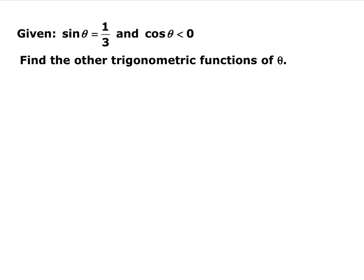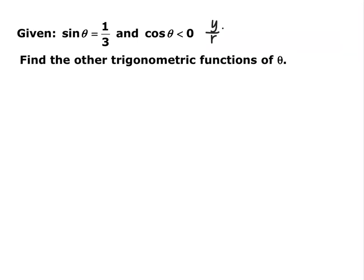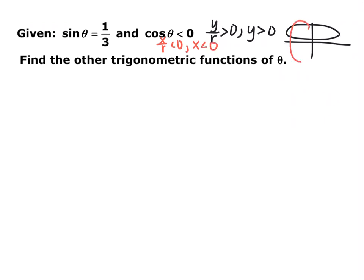The last type of problem gives you one trig function and another piece of information to find the other five. For these problems, draw a triangle. If sine equals 1/3, sine is positive, meaning y over r is positive — since r is always positive, y is positive, placing you in the top half. If cosine is negative, x is negative, placing you on the left half. So you must be in quadrant two. Draw your triangle in quadrant two.